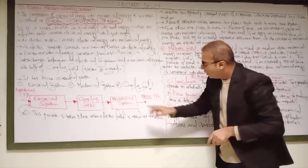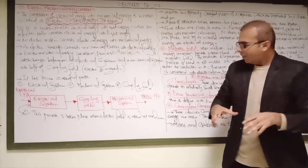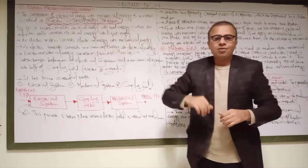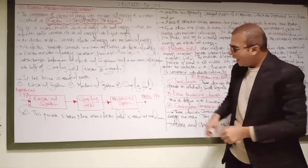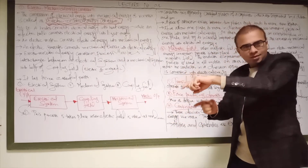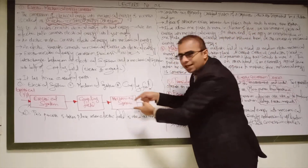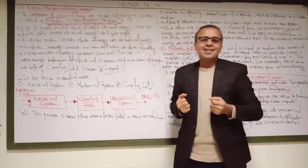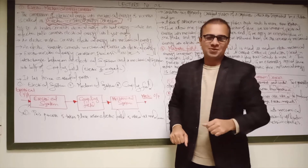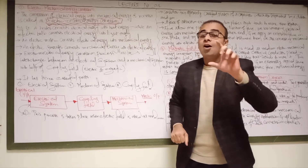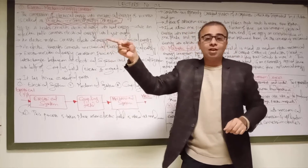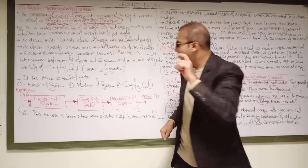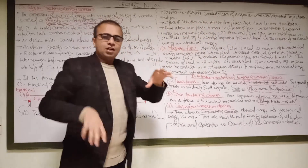In motor operation, the coupling field is a magnetic field, and the mechanical system produces mechanical output — mechanical power is produced with the help of the electrical supply given to the motor. If we reverse this process in the block diagram — giving mechanical energy as input through the coupling magnetic field to obtain electrical energy as output — that is called the generator process, or alternator process, where electrical power is obtained from the output of the alternator or generator.